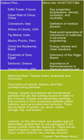Quarks and leptons are fundamental particles that are the building blocks of matter in the universe. Quarks are elementary particles that combine to form composite particles called hadrons, such as protons and neutrons. There are six types of quarks: up, down, charm, strange, top, and bottom.